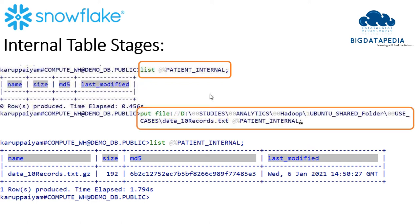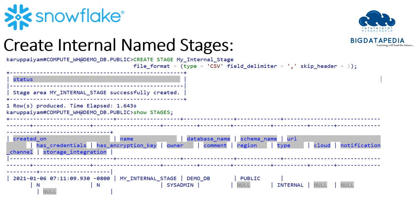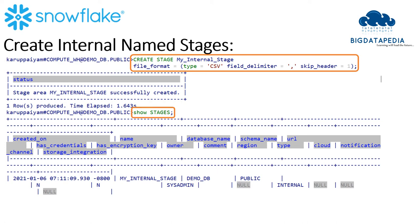Next are named stages. This is the stage type that you can create, drop, and perform all other operations on. Now I am creating a stage named MyInternalStage. I declare the file format as CSV, delimiter as comma, and header as true. Once I execute the command, the stage will be created, and I can see it via SHOW STAGES. The stage name will reflect, and it will show the type as internal.